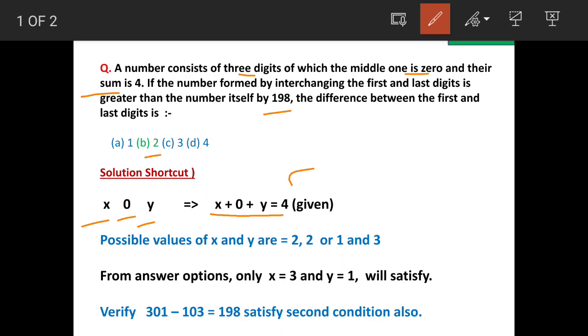So let's understand the meaning of the second statement. Suppose that number is x, 0, y. And when we interchange the digits, it becomes y, 0, x. And the difference is 198. This is what is the meaning of the second statement.